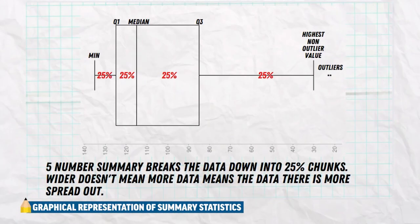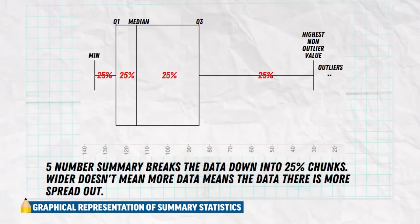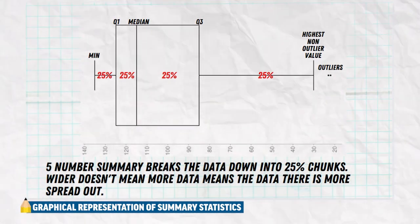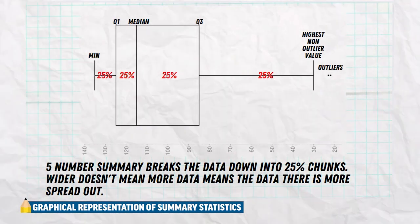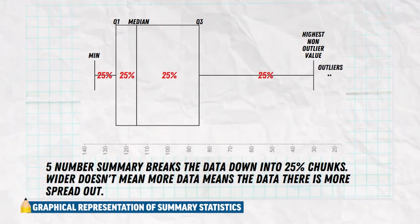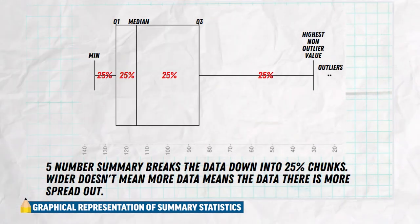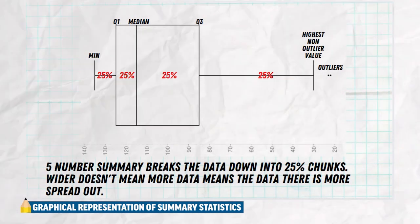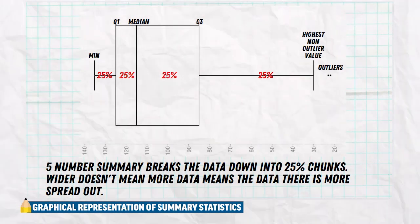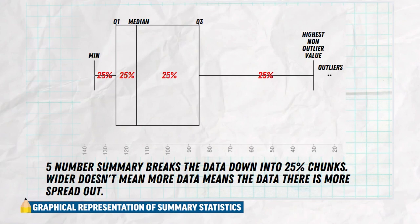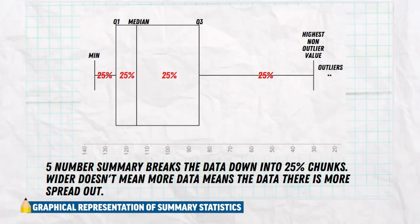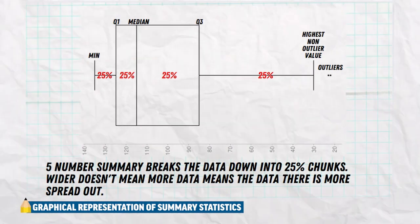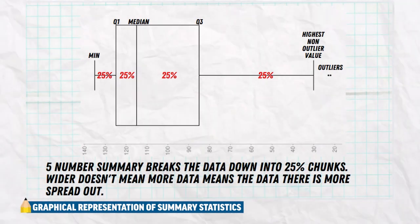Here we see an example of a box plot, and the most important thing is that each section of that box plot represents 25% of our data. Note that there is an outlier on the far right, and that whisker went to the next value in the data that was not deemed an outlier. The five-number summary breaks the data down to 25% chunks. A wider whisker on the far right does not mean more data — it just means that section of the data is more spread out.